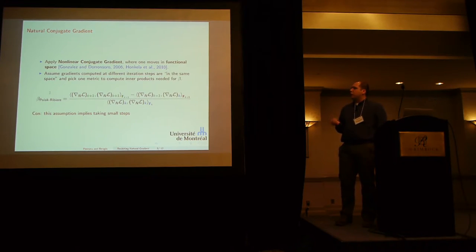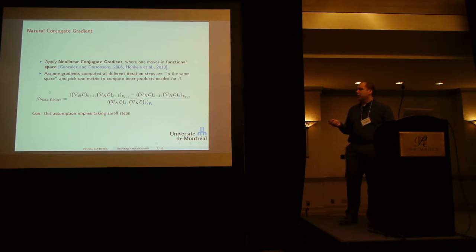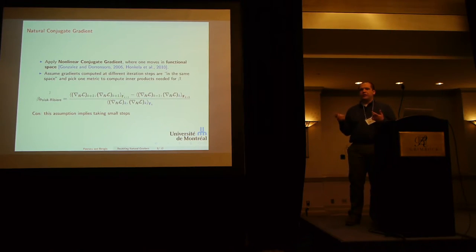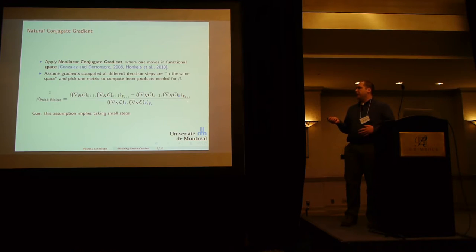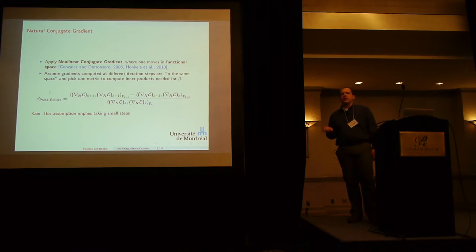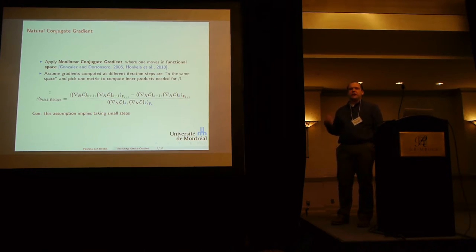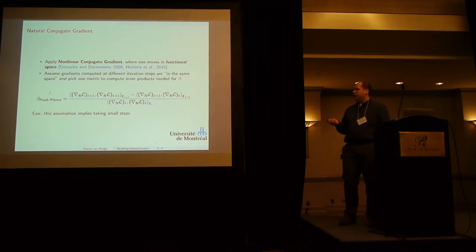One assumption both these papers had to make is that, if you look at the Polak-Ribière formula to get a new conjugate direction, you need to compute the inner product between the gradient of the next step and the previous step. These gradients belong to different tangent spaces with different metrics. So they assumed the geometry doesn't change by much — picking one tangent space and assuming the gradients are the same in both. We argue this assumption can be harmful, because when implementing such an algorithm you're trying to move as far as possible, making it highly unlikely for the metric to stay constant. This means you have to take small steps for the inner product to be computed reliably.